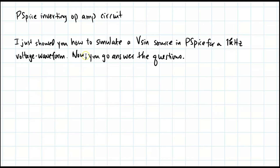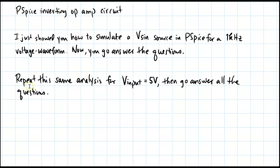I have now shown how to simulate a V-sine source in PSPICE for a one kilohertz voltage waveform. Now repeat the same analysis for V-input equals five volts, then answer all the questions including the additional ones.